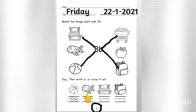Look at the next one, what is this? This is aeroplane. A, A, aeroplane. So we cross out the aeroplane. How about this, children? This is a picture of bat. B, B, bat. So you need to trace the letter B, capital letter B and small letter B.